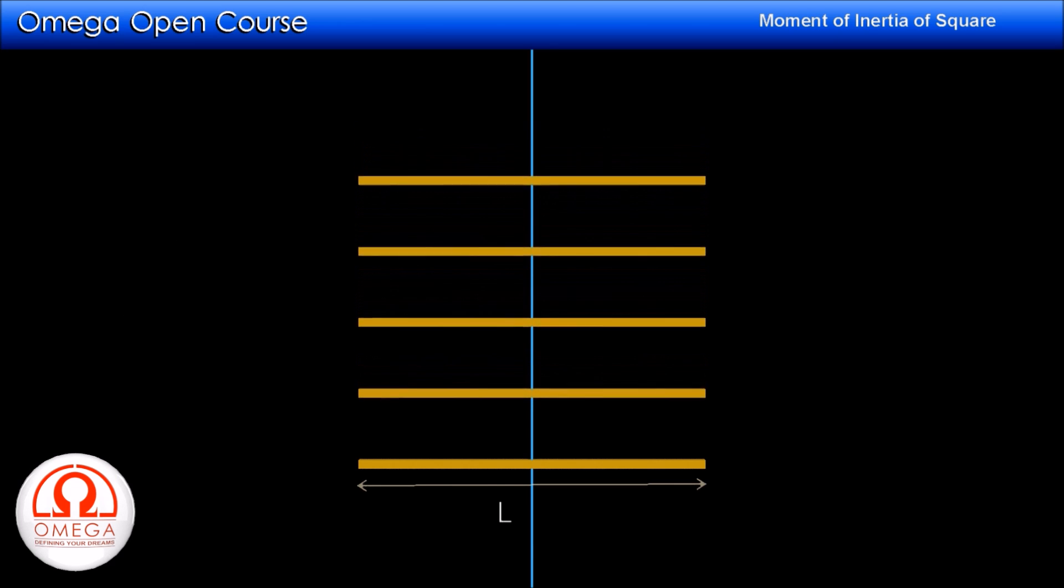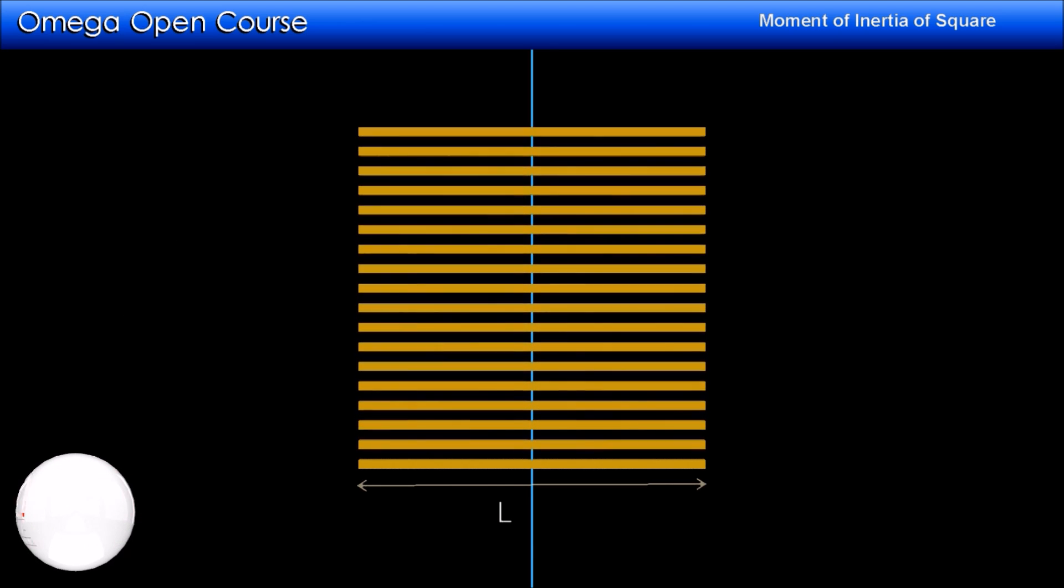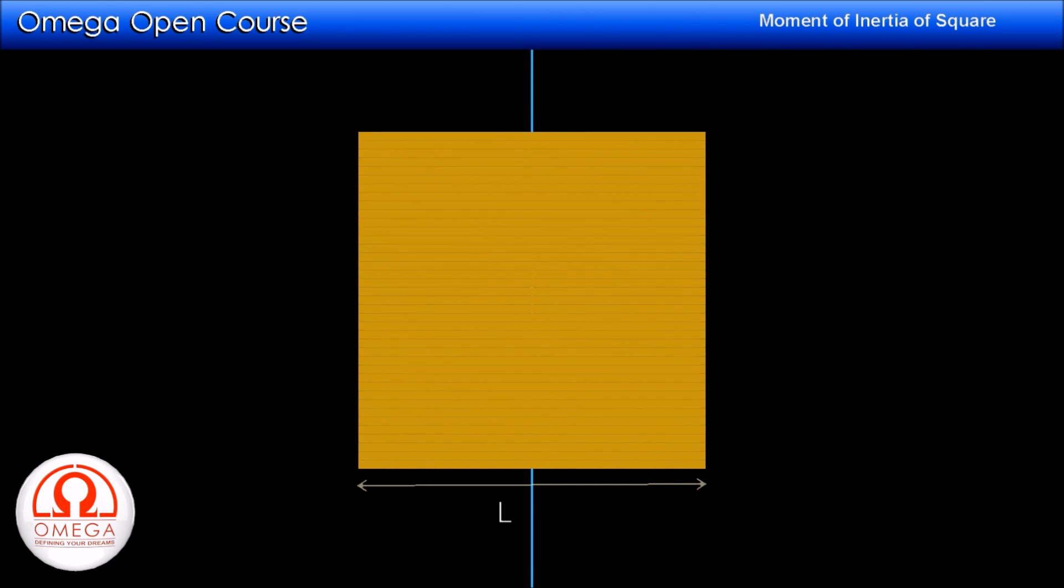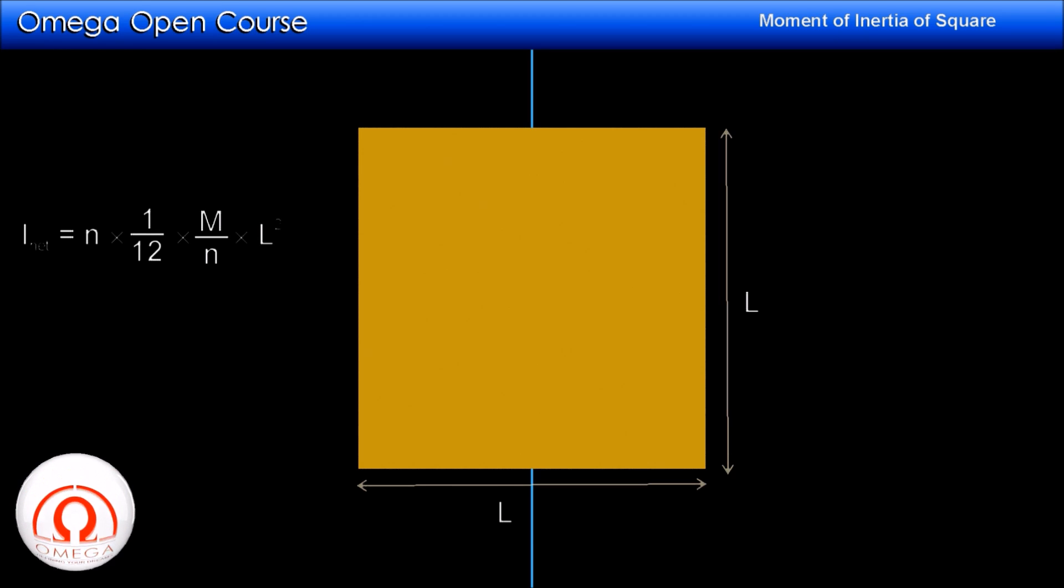Let us bring n such rods such that when they are stacked one over the other, we get a square plate of edge L. Also, make the mass of each rod M/n so that the total mass of the system remains M. Now, the net moment of inertia of the system is n × 1/12 × M/n × L², which is the same as 1/12 ML².